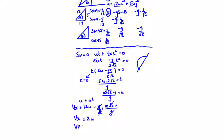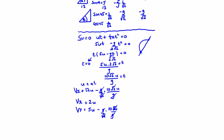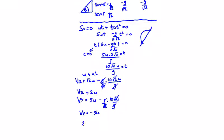V of y is going to be u plus at, 5u minus g over root 2 times 10 root 2u over g. So we're going to get 5u minus 10u, which is minus 5u in the y direction. So my velocity is now 2u in the i direction minus 5u in the j direction. So this is just before impact.